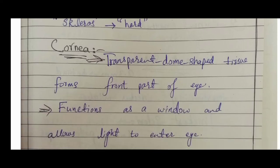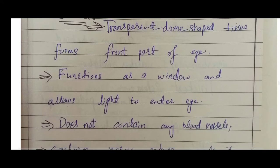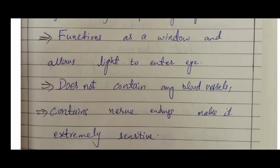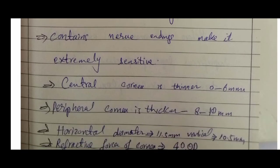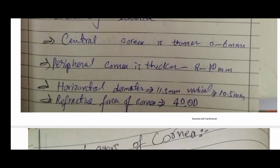The cornea is a transparent dome-shaped tissue that makes up the front part of the eye. It functions as a window through which light enters the interior. It is avascular — it has no blood vessels — but it contains nerve endings that make it extremely sensitive to light. The central cornea is thinner at 0.6 mm, while the peripheral cornea is thicker at about 0.8–1.0 mm. Its horizontal diameter is about 11.5 mm, its vertical diameter is about 10.5 mm, and its refractive power is about 40 diopters.